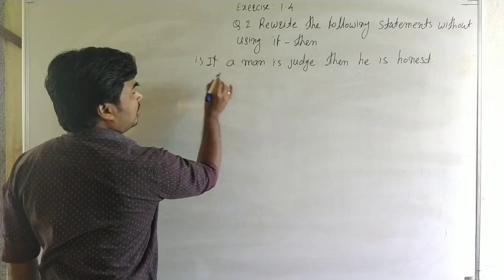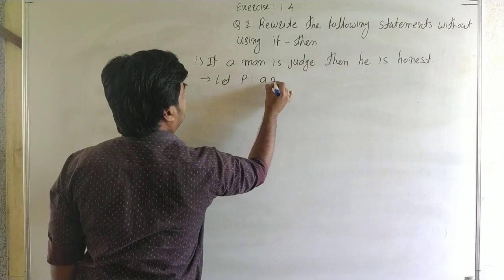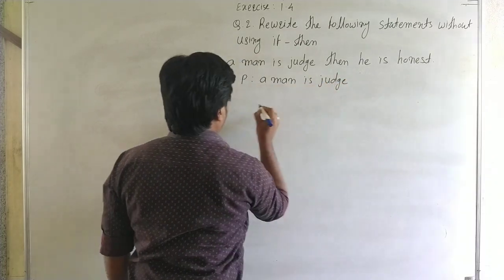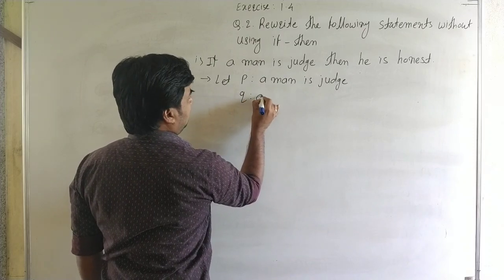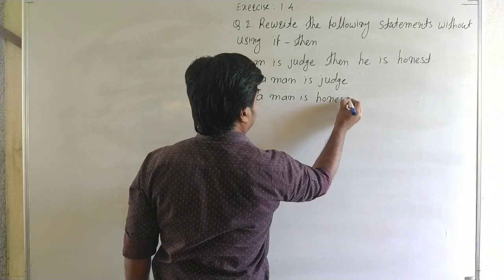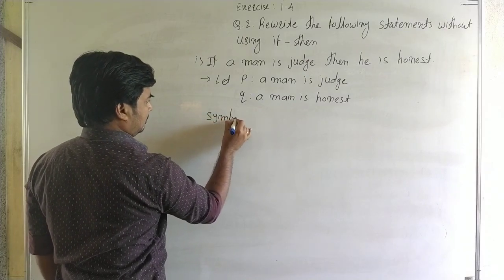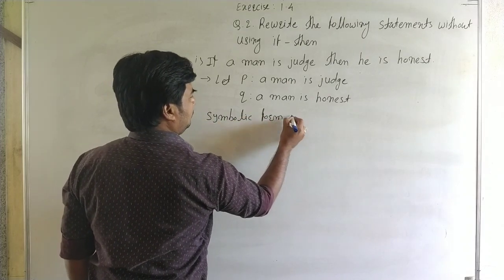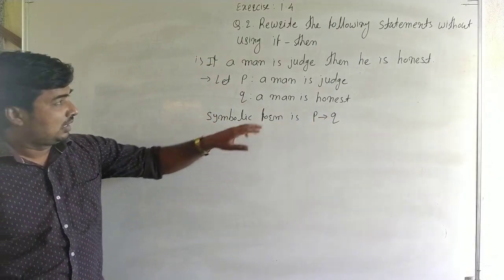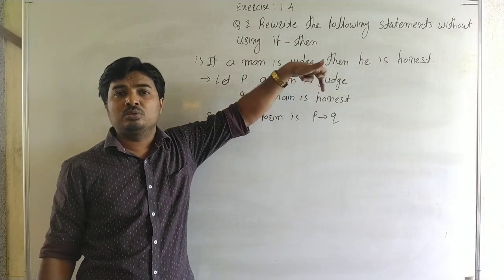First, we write the symbolic form of this statement. Let P: a man is a judge, and Q: a man is honest. Therefore, the symbolic form of the given statement is P implies Q. The given statement is P implies Q, and we want to write the equivalent statements to P implies Q without using implication.